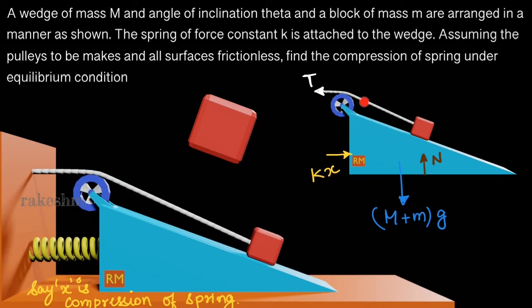Let us write the forces on the wedge plus small block system. The tension force due to string we have written as T towards left and let us say x is the compression in the spring. If x is compression in the spring, the spring will push the wedge towards right with magnitude kx. Capital M plus small m times g is the gravitational force on this whole system and N is the normal reaction on the wedge due to ground.